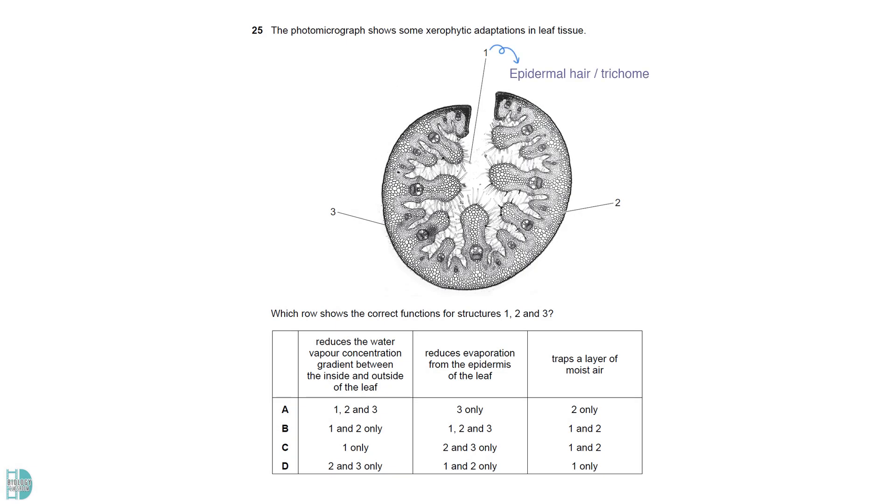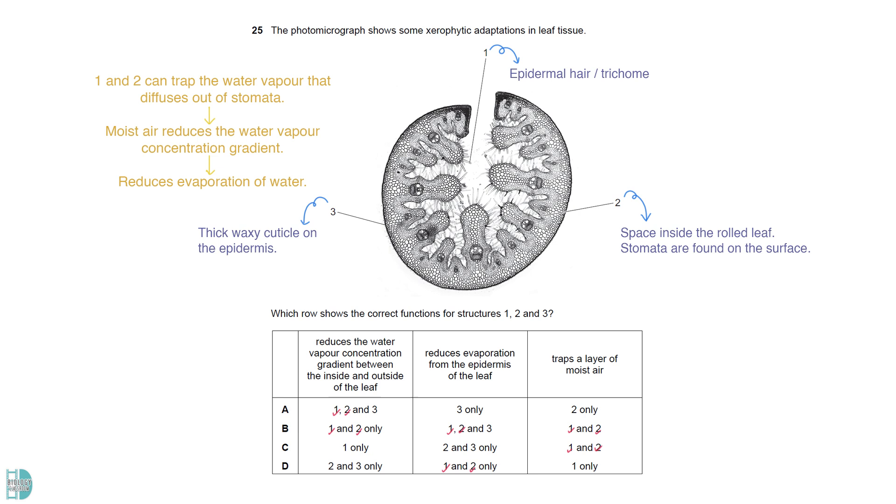One is the epidermal hair called trichome. Two refers to the space inside the rolled leaf. Stomata are found on this surface. Three shows the thick waxy cuticle on the epidermis. One and two can trap the water vapor that diffuses out of the surface. The moist air will reduce the water vapor concentration gradient and hence the evaporation of water. The waxy cuticle creates a barrier that prevents water from evaporating too.